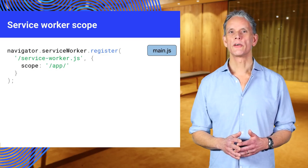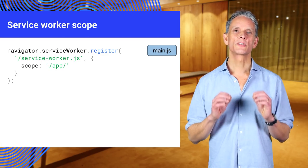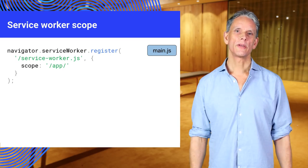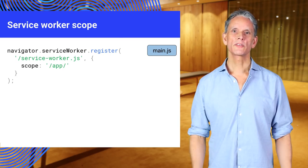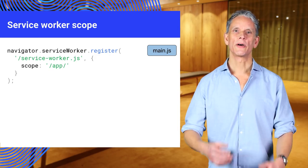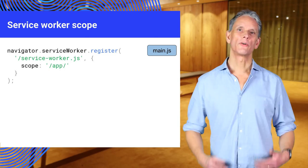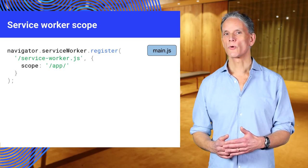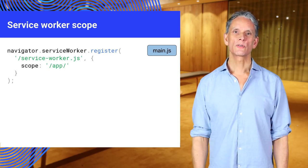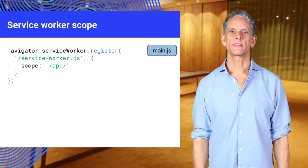The scope of the service worker determines from which path the service worker will intercept requests. The default scope is the path to the service worker file and extends to all directories below it. So if the service worker script — for example, serviceworker.js — is located in the root directory, the service worker will control requests from all files at this domain.